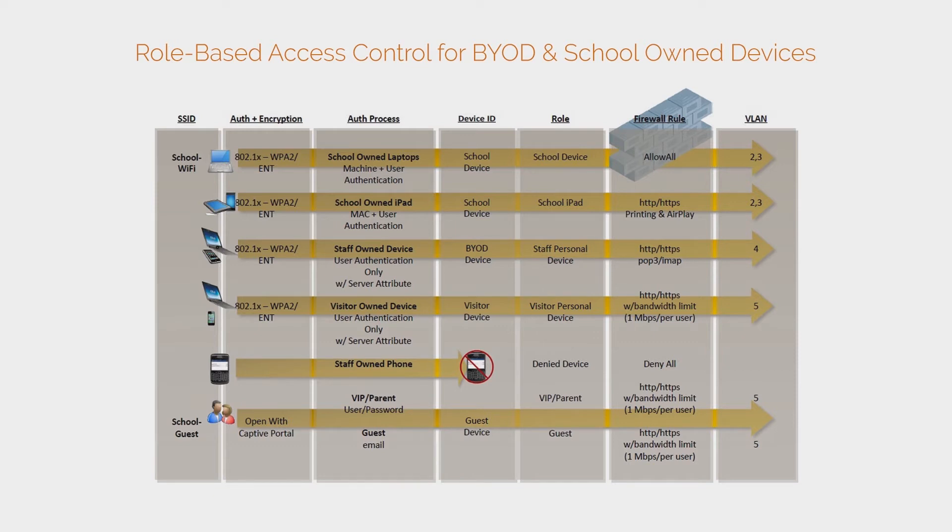In the diagram, you can see that through different levels of authentication, we can apply a role to that user or device, and then apply different policies and different levels of access to the network.